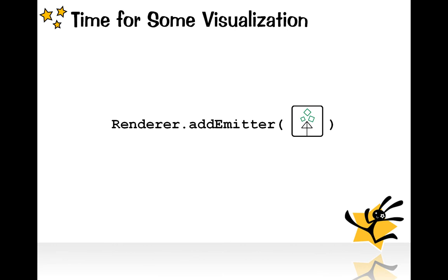After all these classes are set, you are ready to manipulate the numeric data. The renderer is for visualizing the numeric data in your memory, so you have to add an emitter to the renderer. You add an emitter to the renderer through the renderer's addEmitter method.